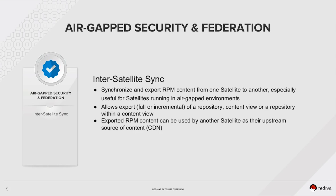Another new feature is the inter-satellite sync feature, which makes it very simple to synchronize and export content from one satellite to another. This is very useful for satellites running in air-gapped environments where it is impossible to have one satellite connect directly to the internet. This enables export of a repository, a content view, or a repository within a content view in a full or incremental manner. This exported content can be used by another satellite — connected or disconnected — as their upstream source of content, effectively as their Red Hat CDN.